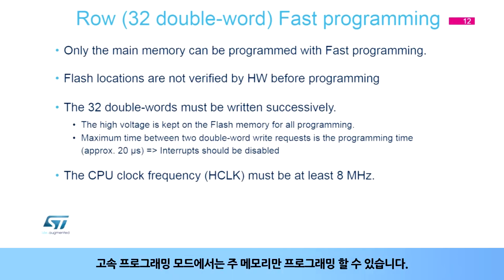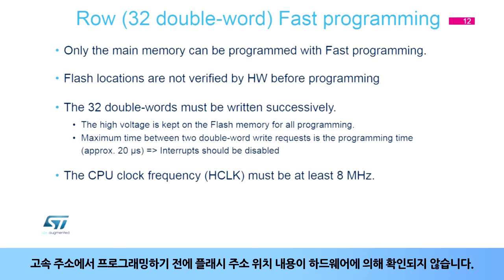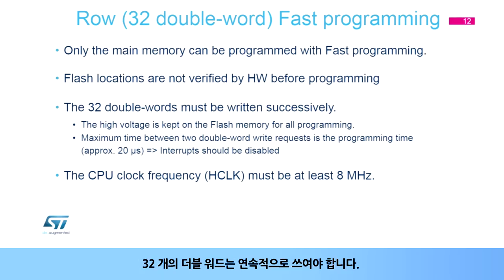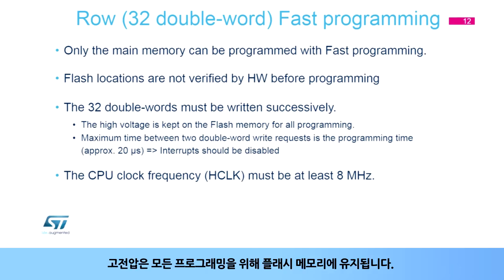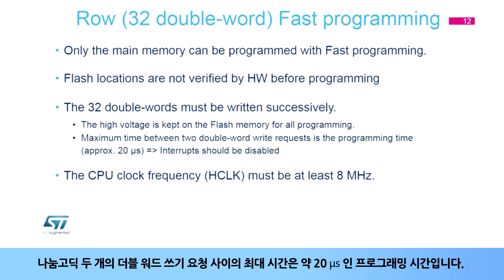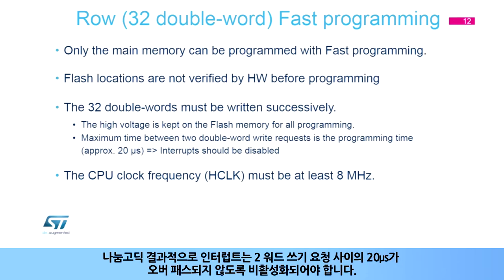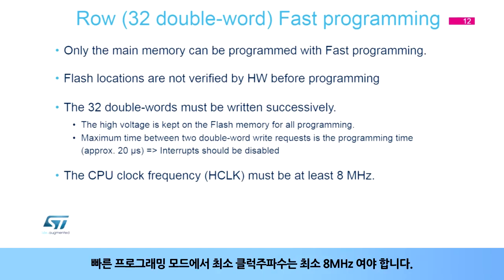Only the main memory can be programmed in fast programming mode. The flash address location contents are not verified by hardware before programming in fast mode. The 32 double words must be written successively. The high voltage is kept on the flash memory for all programming. The maximum time between two double word write requests is the programming time, approximately 20 microseconds. Consequently, interrupts should be disabled to ensure the 20 microseconds between two word write requests is not exceeded. The minimum clock frequency must be at least 8 MHz in fast programming mode.